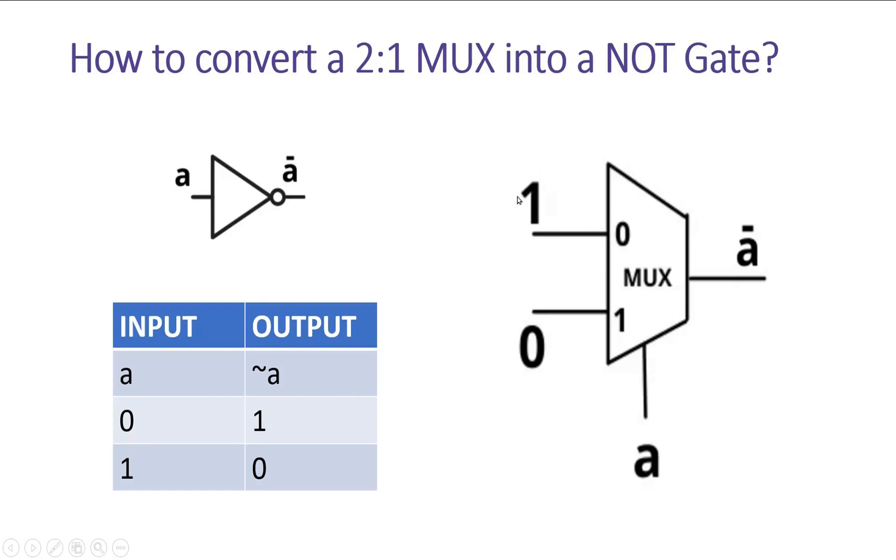Similarly, when a is 1, I know I1 will be passed at the output of the multiplexer. So what is the output required there? 0. So I will tie 0 to this I1 input.